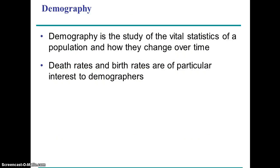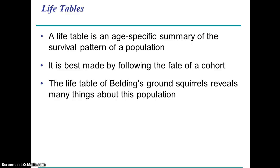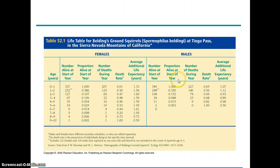Demography is the study of population dynamics and the factors that impact populations. There are human demographers and demographers who study other species. A common device used is the life table, which looks at different cohorts and what's happening to them — in particular it focuses on mortality. For example, with these ground squirrels, different cohorts exist at any given moment.